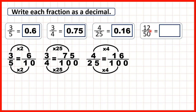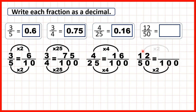Finally, we have twelve-fiftieths. Well, one hundred is in the fifty times table, because fifty times two is a hundred, so we do the same to the numerator, and twelve times two is twenty-four. So now that we know that twelve-fiftieths is equivalent — the same size as — twenty-four hundredths, we know that we can write it as the decimal zero point two four.